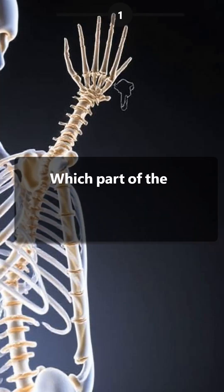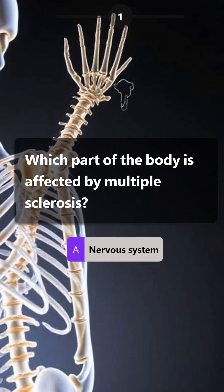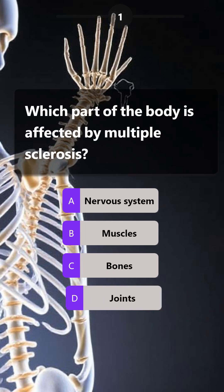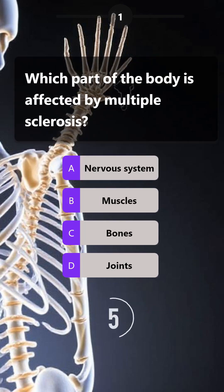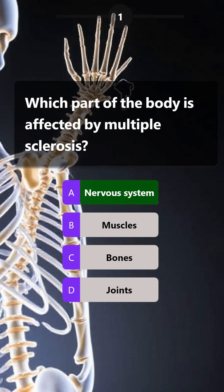Which part of the body is affected by multiple sclerosis? Nervous system, muscles, bones, joints. Answer is: nervous system.